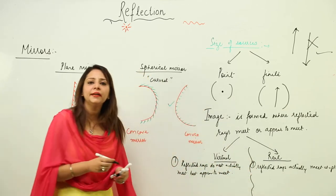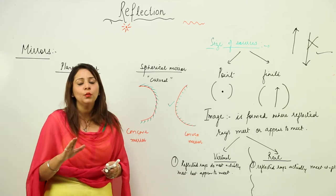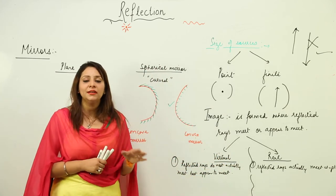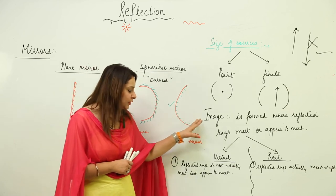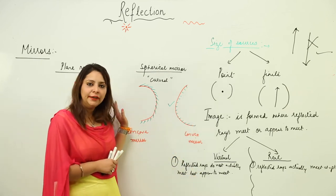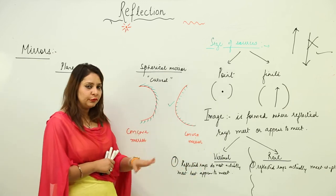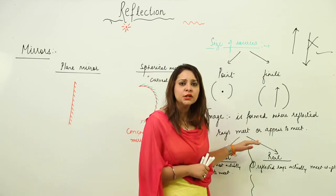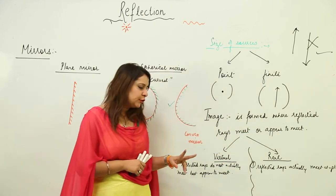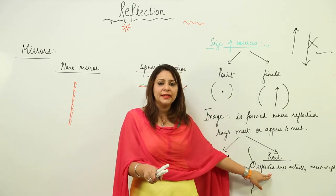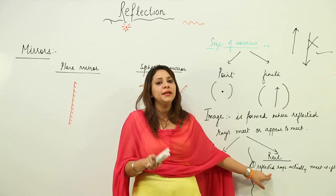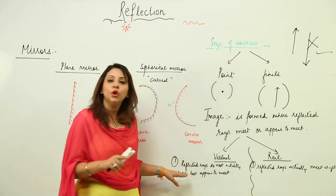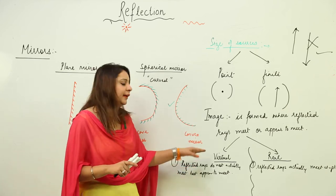Virtual image is formed when reflected rays do not actually meet at any point but appear to meet — we hypothetically assume they appear to meet at a certain point. So image is formed where reflected rays meet or appear to meet: when they actually meet the image is real, and when they just appear to meet the image is virtual.